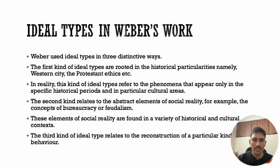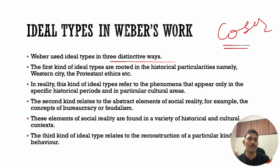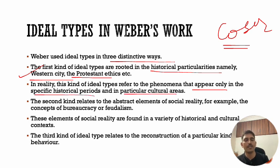A sociologist named Coser did a categorization of Weber's use of ideal types in three different senses. First, he prepared ideal types rooted in historical particularities — for example, he gave the ideal type of a western city, and also the ideal type of Protestant ethics. These types refer to phenomena that appear only in specific historical periods and particular cultural areas — they are once-in-a-lifetime type of things.